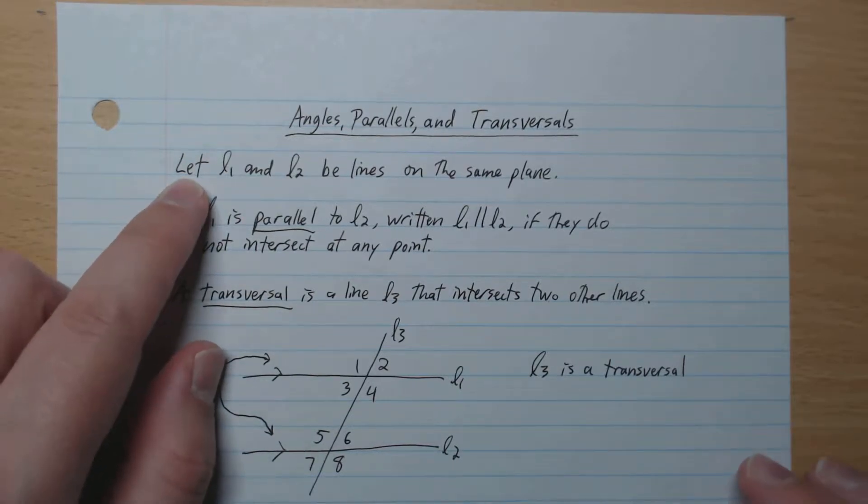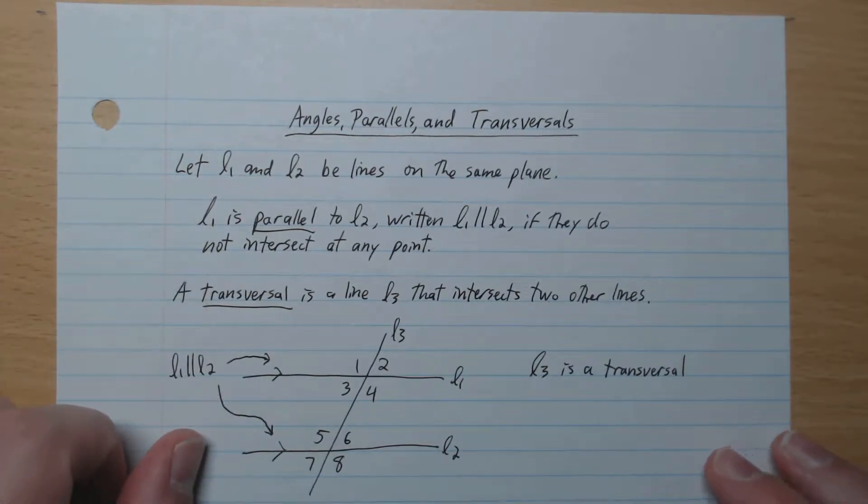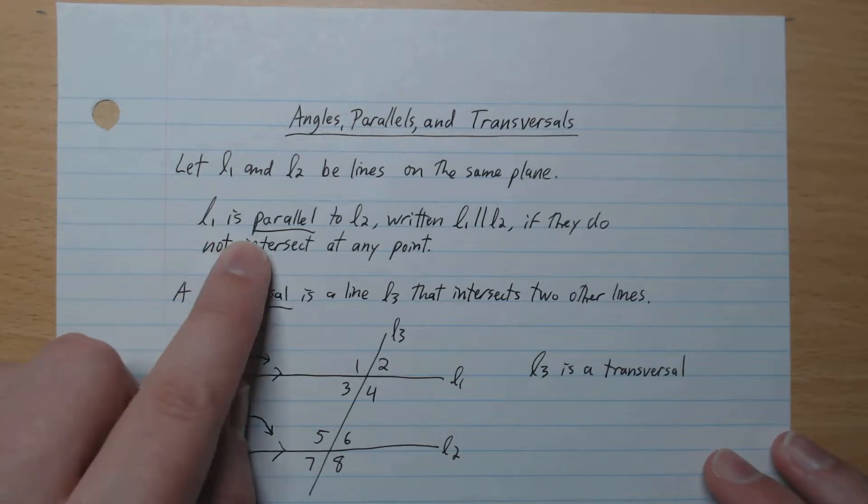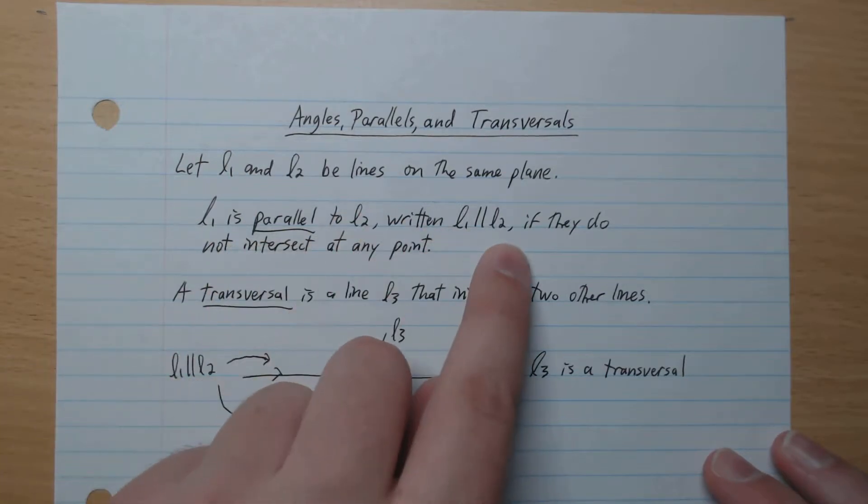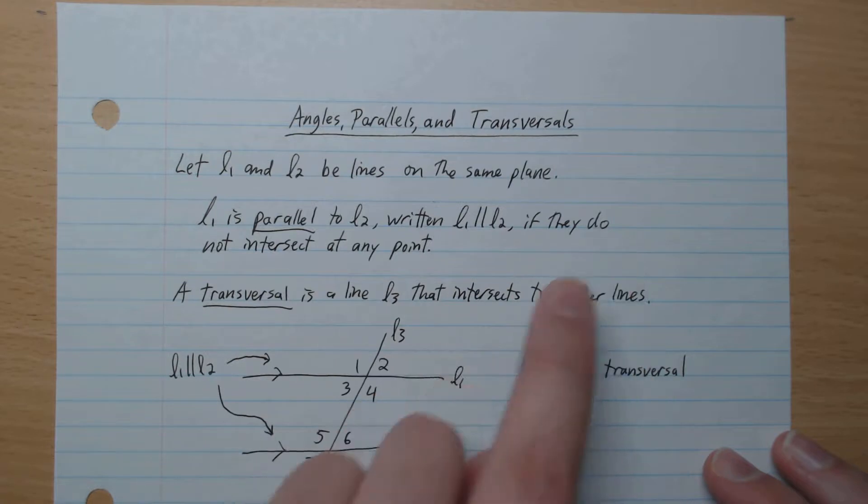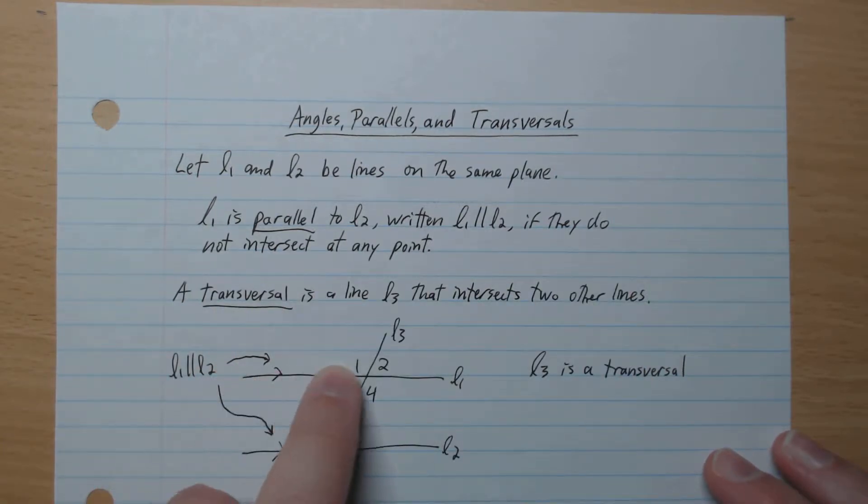Let L1 and L2 be lines on the same plane. We say that L1 is parallel to L2, written L1 parallel L2, if they do not intersect at any point.